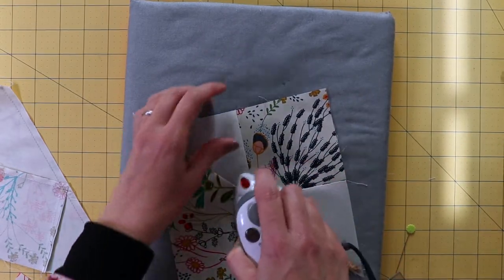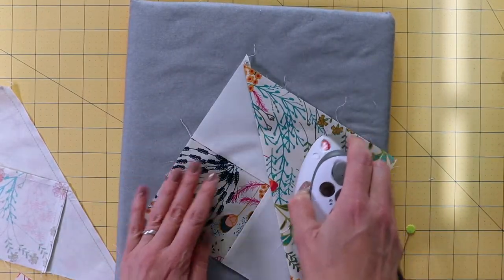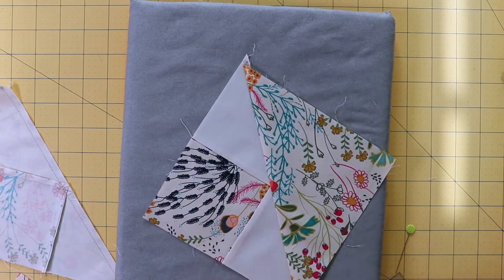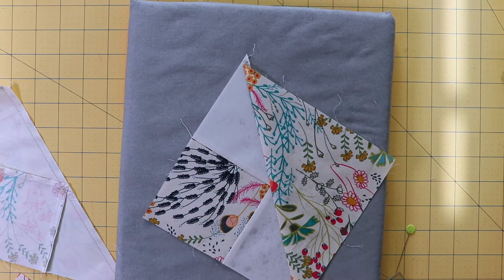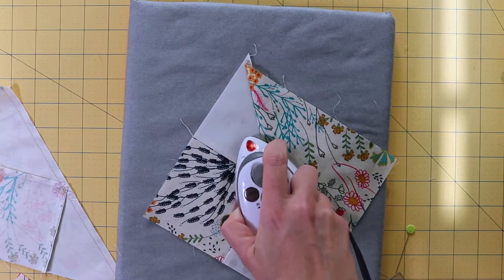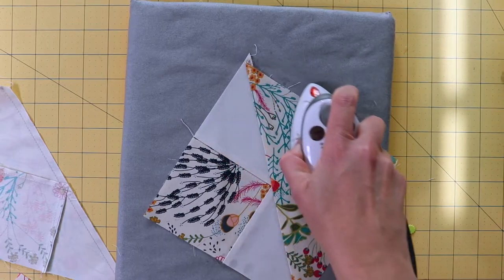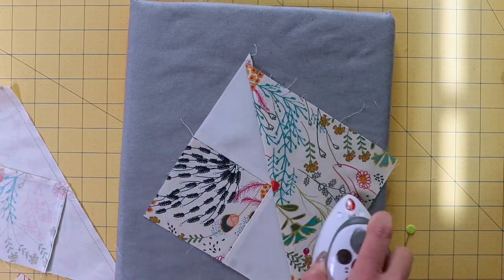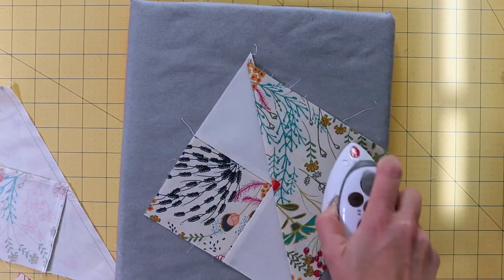I'm going to press the other side. This is where I like to use starch, because I think it gets a little bit crisper. So it's almost looking like it's done.